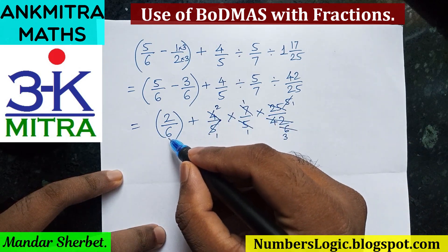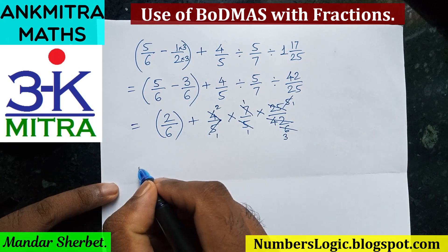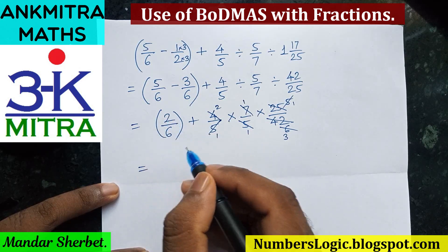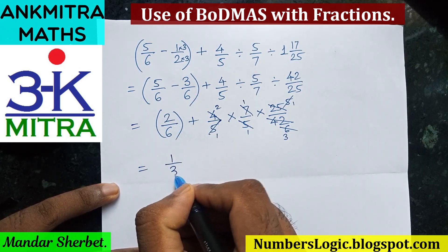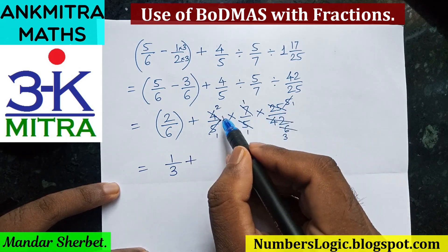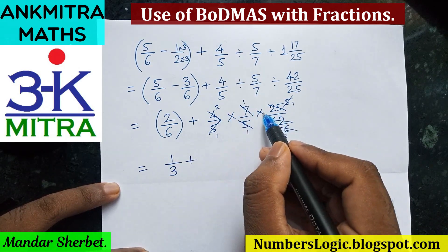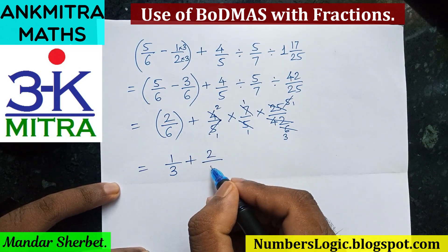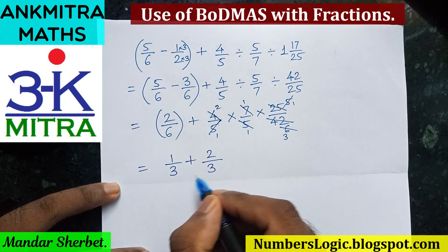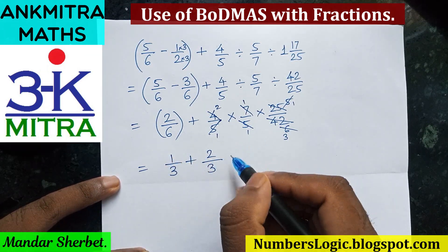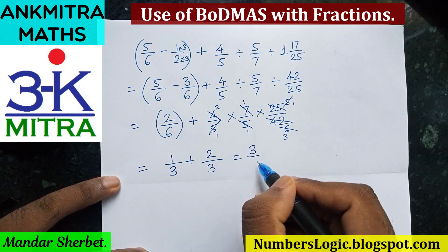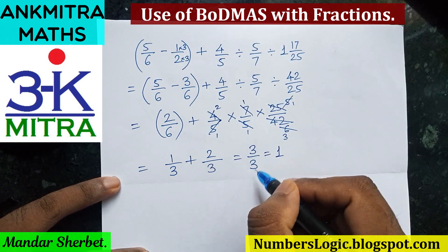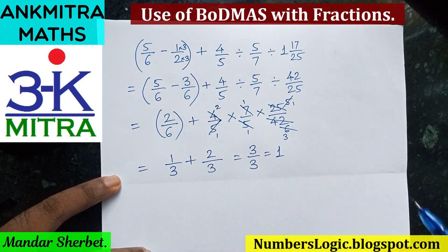For the next step, two upon six reduces by 2 to give one upon three. Adding: in the numerator we have 2 multiplied by 1 multiplied by 1, which is 2, and in the denominator 1 multiplied by 1 multiplied by 3, which is 3. Now we have a common denominator of 3, so the numerators are added, giving three upon three. Three upon three equals 1, which is the final answer.